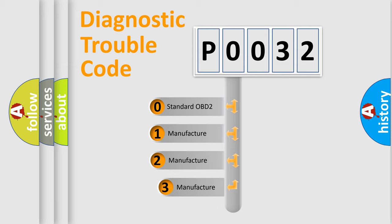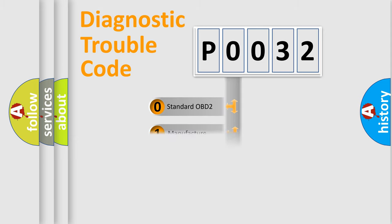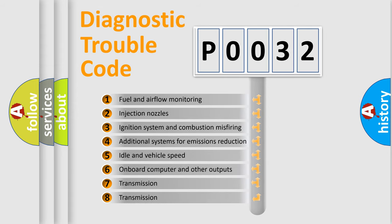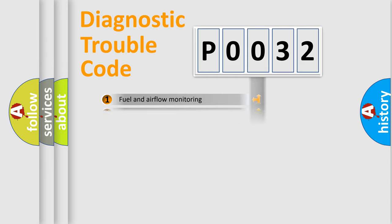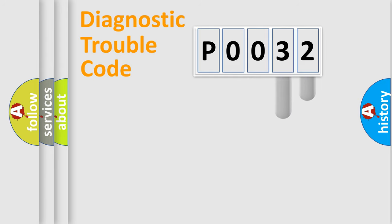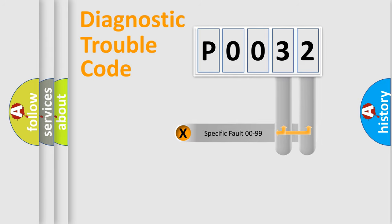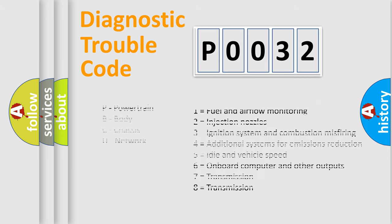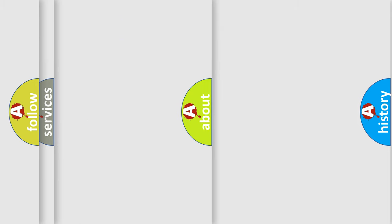If the second character is expressed as zero, it is a standardized error. In the case of numbers 1, 2, or 3, it is a more specific manufacturer-defined error. The third character specifies a subset of errors. This distribution is valid only for the standardized DTC code, and only the last two characters define the specific fault of the group. This division is valid only if the second character is zero.